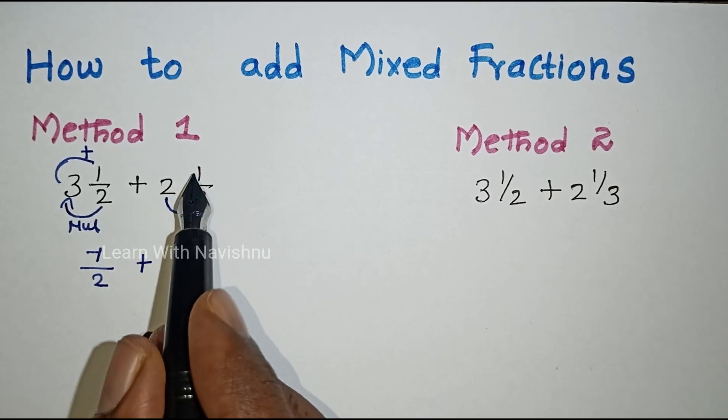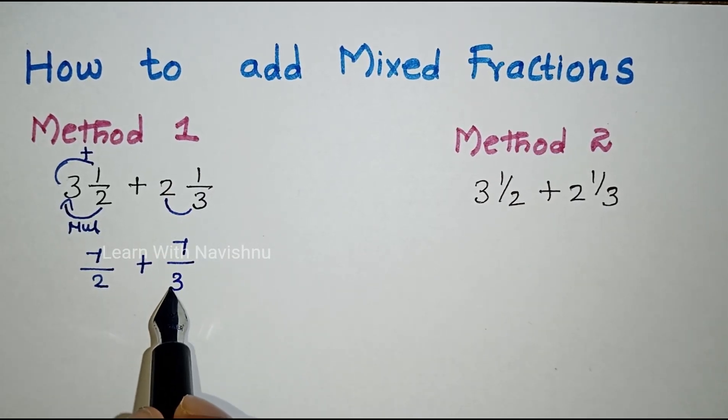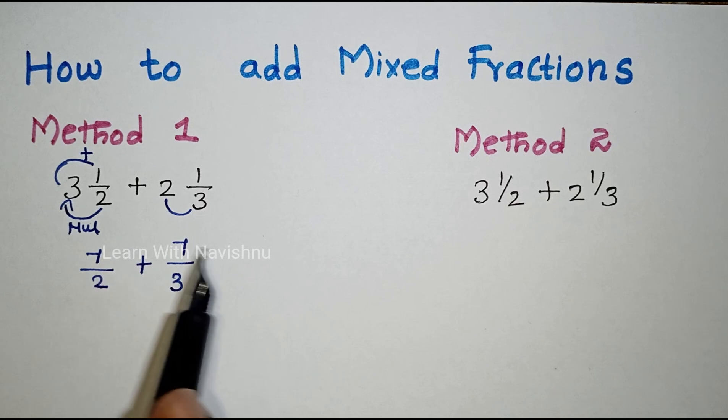For the second fraction: 3 times 2 is 6, 6 plus 1 is 7, divided by 3.